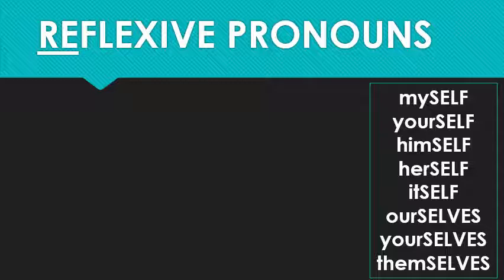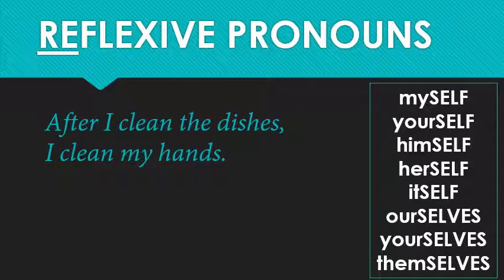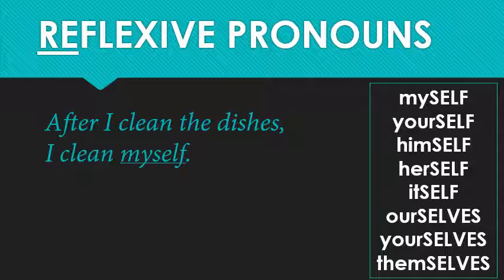Reflexive pronouns describe action that affects the subject of your sentence. For example: 'After I clean the dishes, I clean my hands.' The dishes are something else — but 'I clean myself' turns that action back to 'I.' Who benefits from the cleaning? The same person who's doing the cleaning in the first place. Another example: 'Responsible parents feed their kids' — they feed other people. 'Selfish parents feed just themselves' — the food comes back to them. They are doing an action, but the action is received by them. The subject and the direct object are the same.